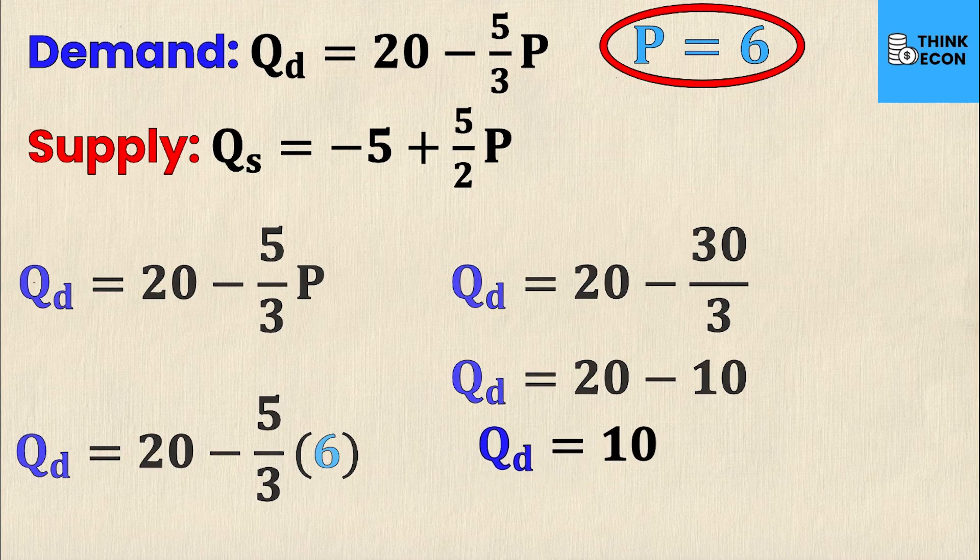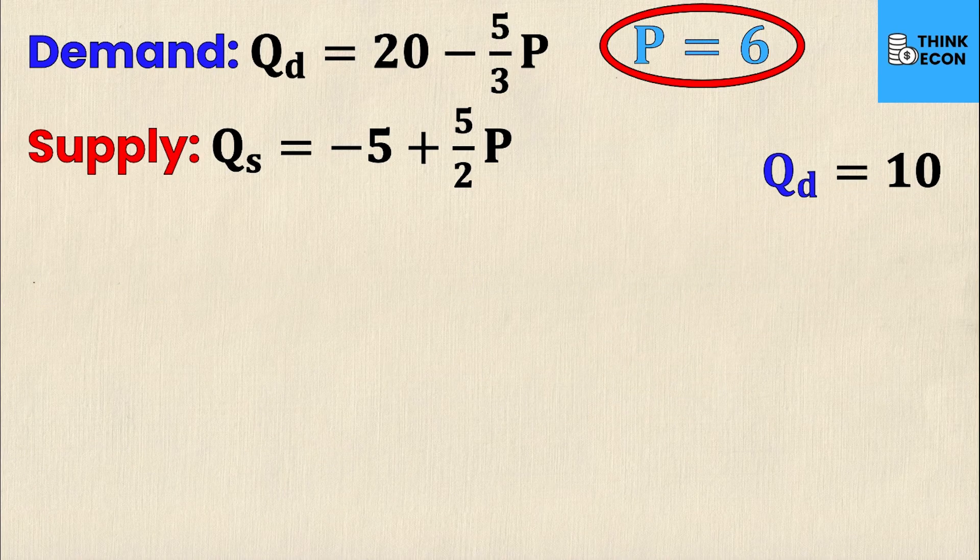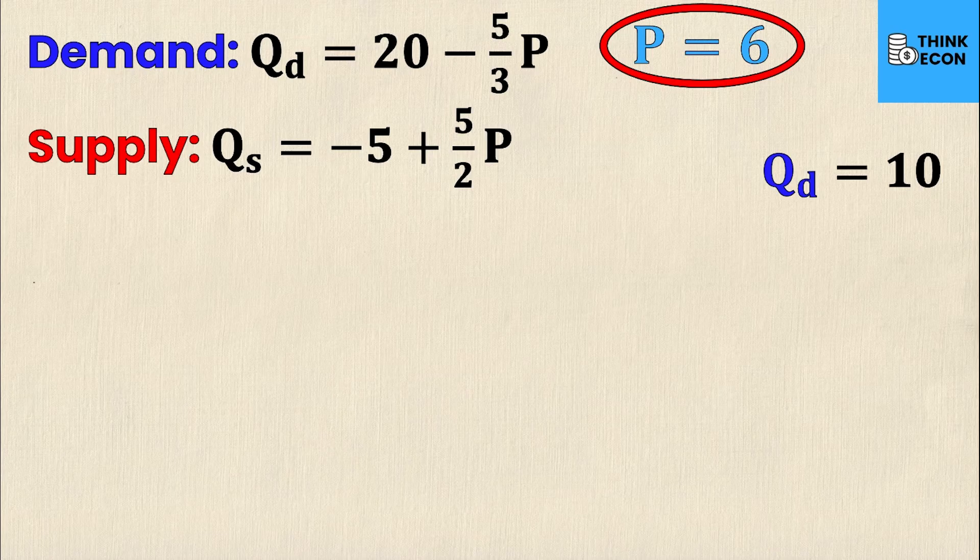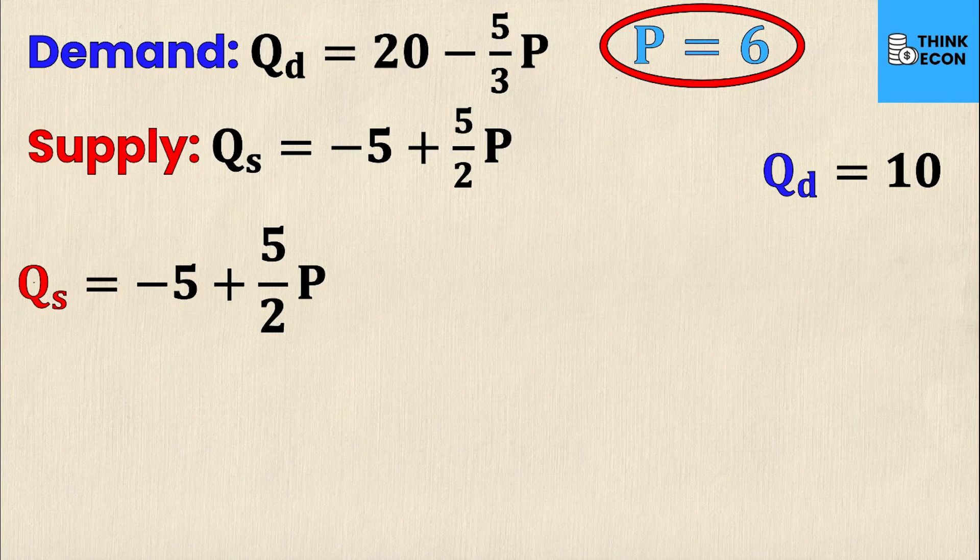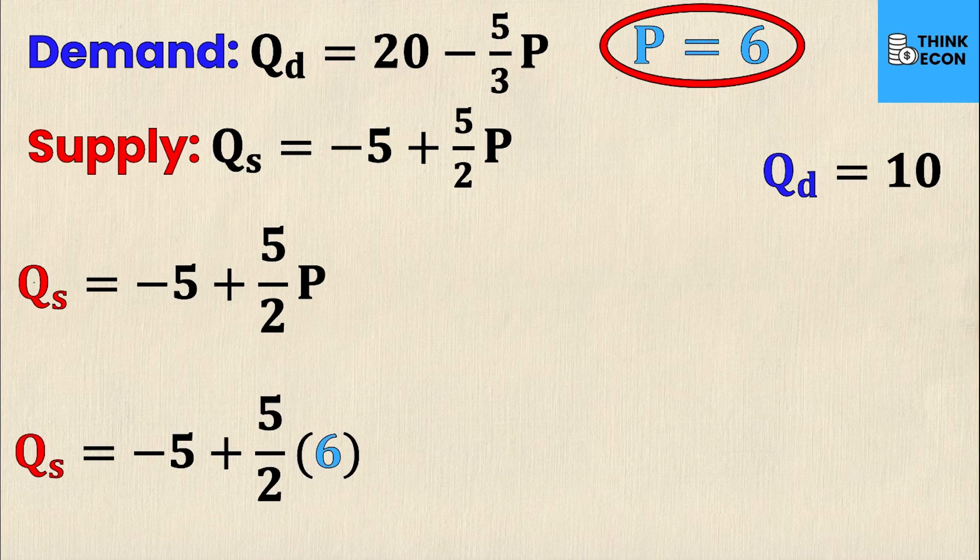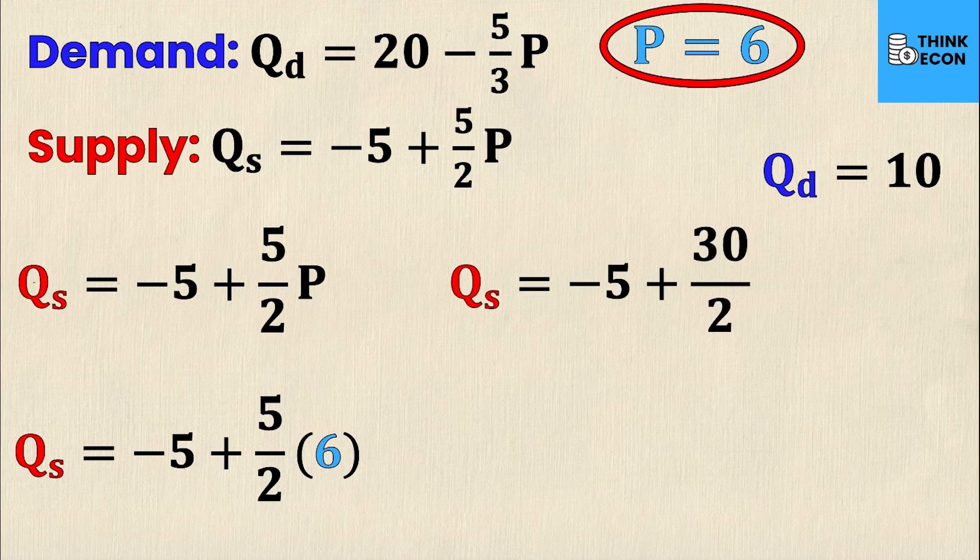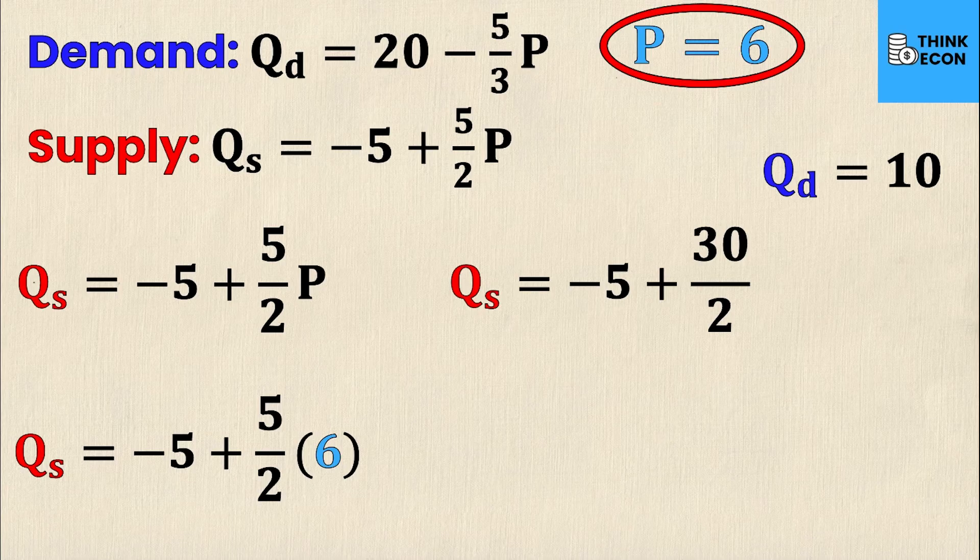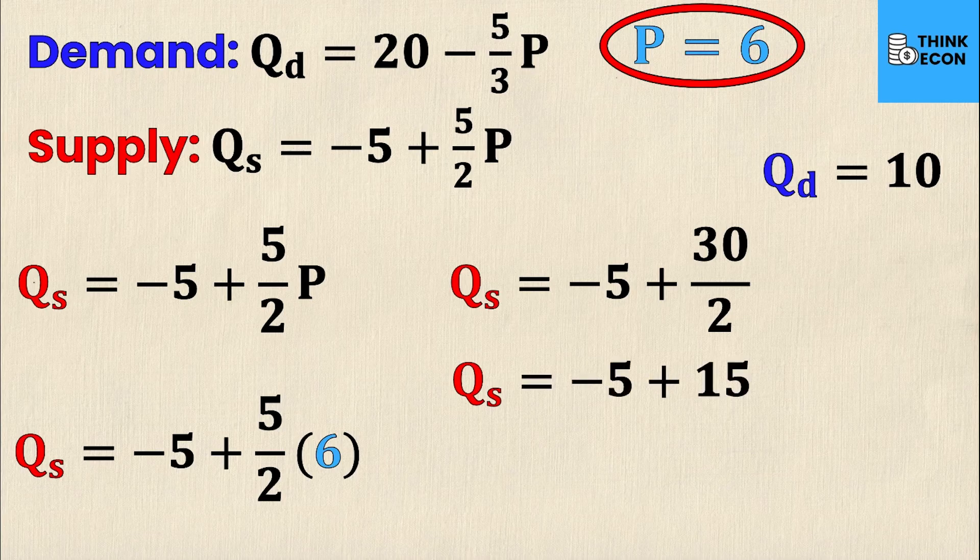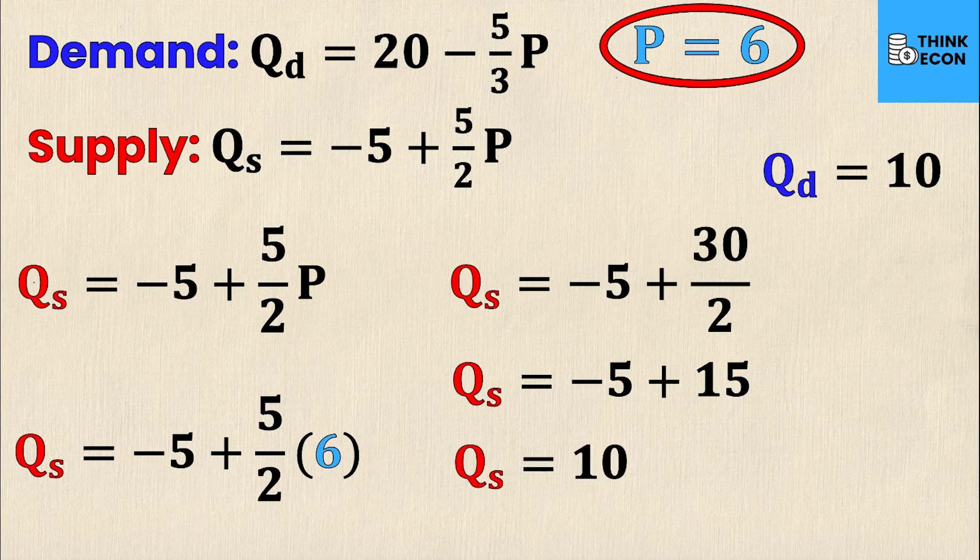I told you that if you were to sub in P equals 6 into the supply equation, you would get the exact same value for Q. Let's make sure. Rewriting the supply equation gives me QS equals negative 5 plus 5 over 2P. I'm going to sub in 6 for P because I know what it is in equilibrium. That gives me QS equals negative 5 plus 5 over 2 times 6. I'm going to multiply that 6 times 5 to get 30. The next line is QS equals negative 5 plus 30 over 2. 30 divided by 2 is 15, and finally QS equals negative 5 plus 15, which equals 10.